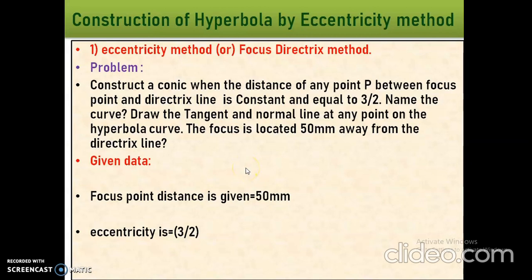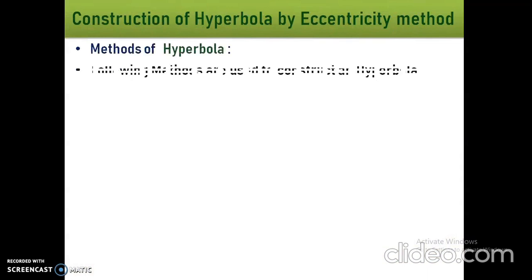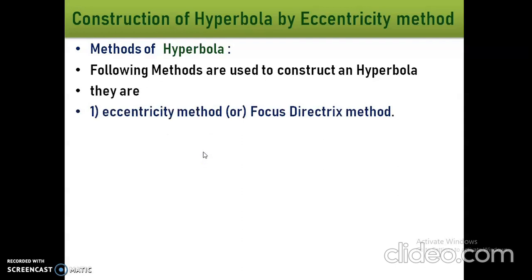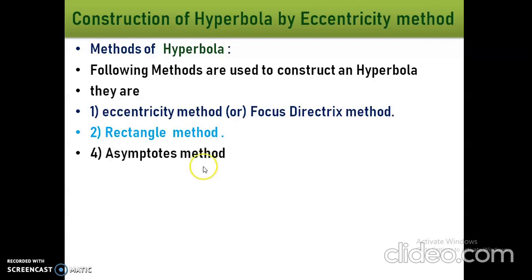Let us see the methods of hyperbola. Generally, we have 3 methods for constructing the hyperbola: first is the eccentricity method or focus directrix method, second is the rectangle method, and third is the asymptote method. From our syllabus point of view, we have only one method — the eccentricity method or focus directrix method.